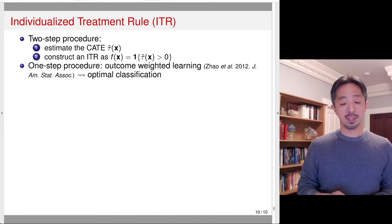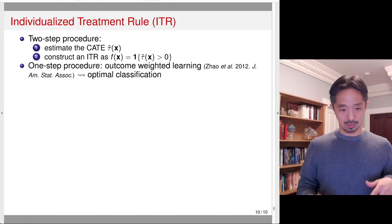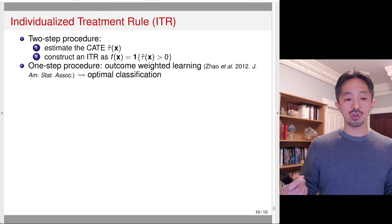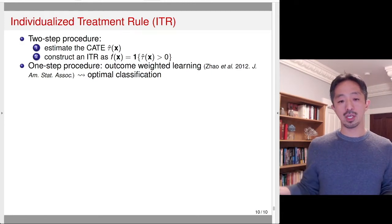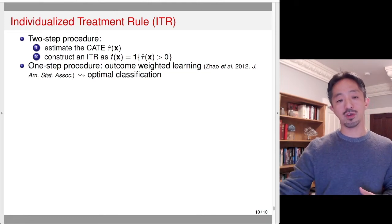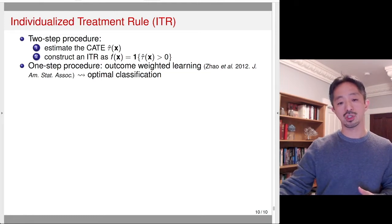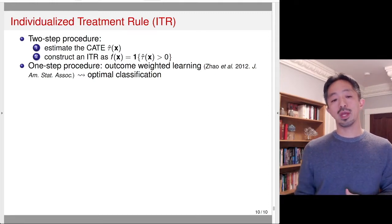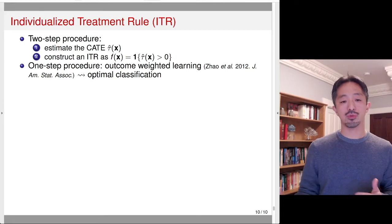The idea is to formulate the construction of the ITR as an optimal classification problem — classifying individuals based on their estimated CATE, so that those with positive CATE are assigned to treatment and those with negative CATE are assigned to control.